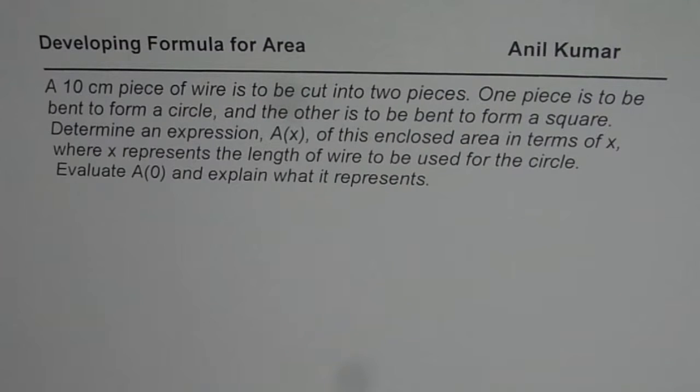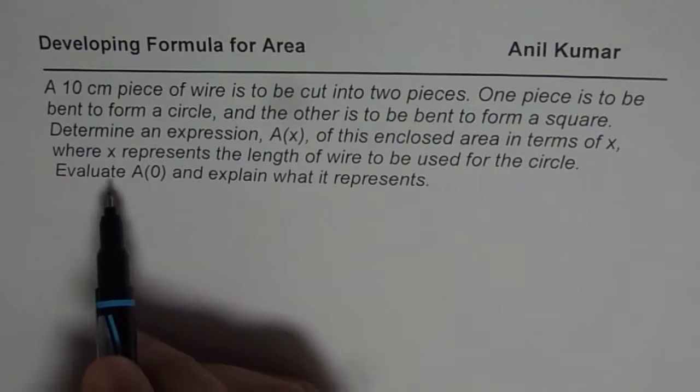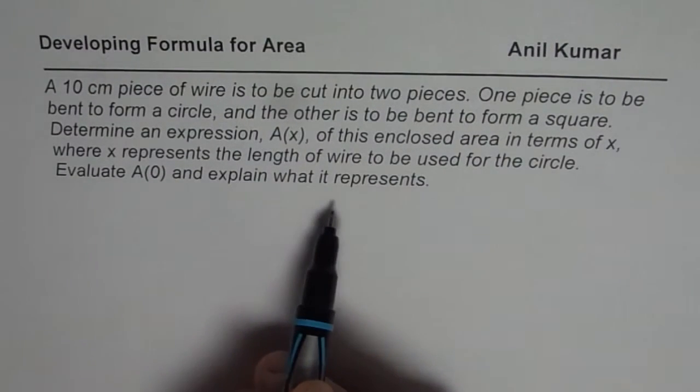Determine an expression A(x) of this enclosed area in terms of x, where x represents length of wire to be used for the circle. Evaluate A(0) and explain what it represents.